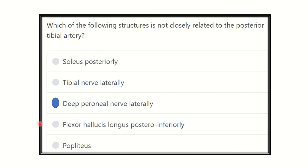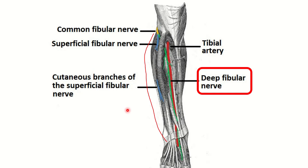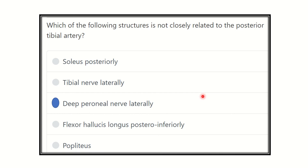So our final answer is the deep peroneal nerve, because the deep peroneal nerve is an anterior compartment content and is therefore not closely related to the posterior tibial artery. Thank you all.